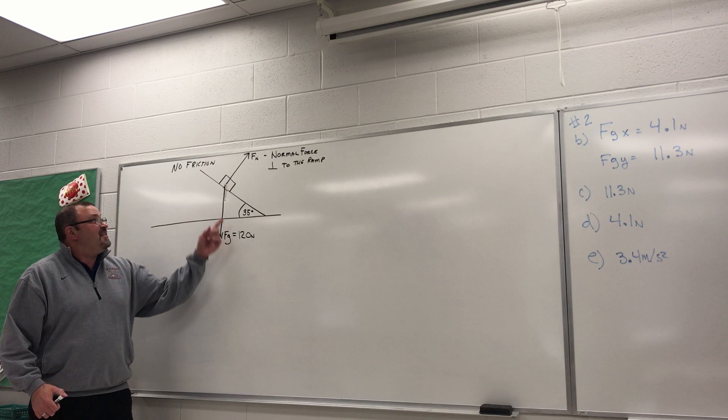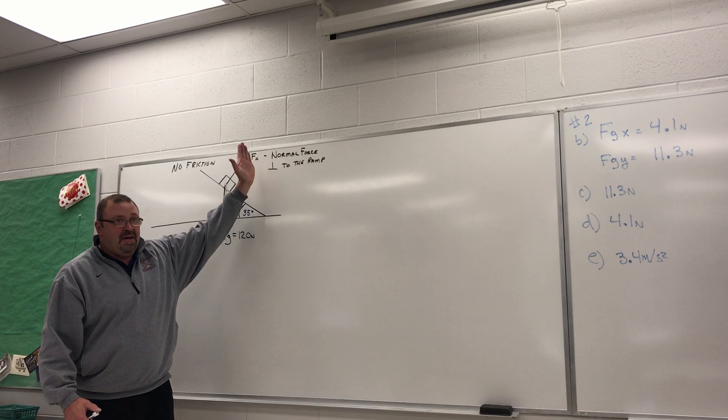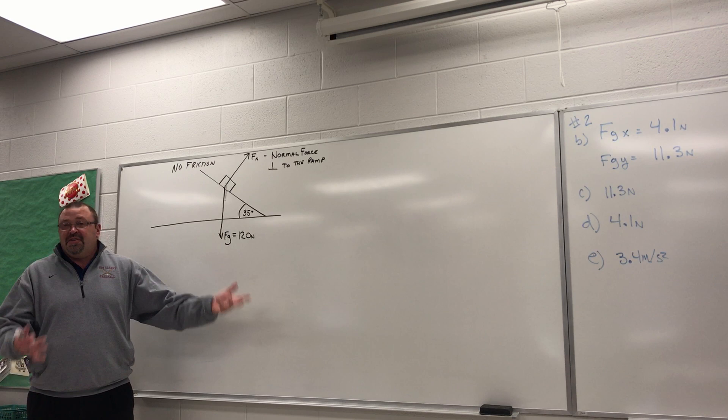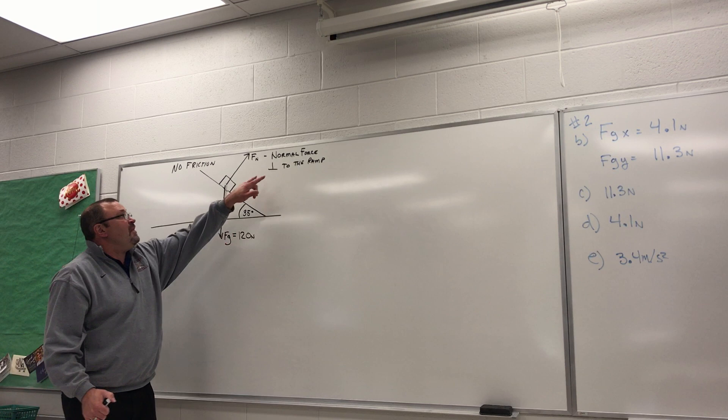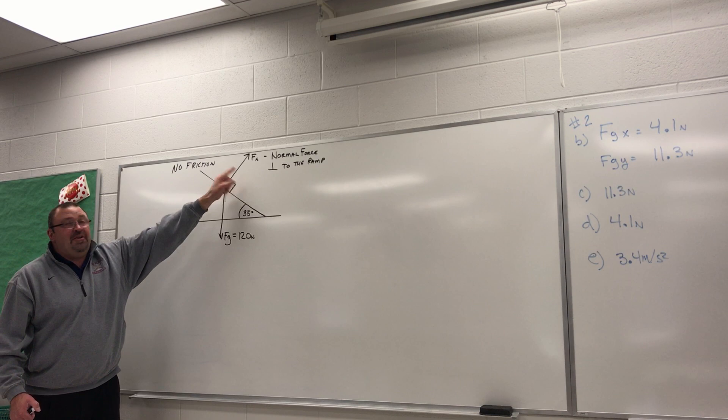So, what's going to make this thing slide down the ramp is the gravitational force. Okay. But, not all of it. If we wanted this thing to accelerate just from the force of gravity, we'd have to tilt this ramp all the way straight up. And then it would fall straight down. And then we could say there's 120 newtons making it accelerate. And we would get an acceleration of 10, of course, because all things accelerated down at negative 10 meters per second squared.